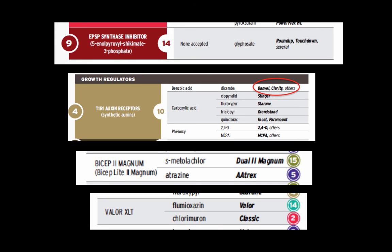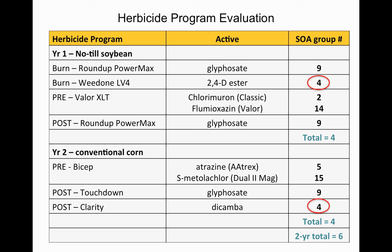Another way to introduce diversity is to keep glyphosate post in corn but add dicamba — via Status or Clarity. Looking up Clarity on the chart shows it's dicamba, a Group 4 site of action, which introduces some diversity in post-corn. This is an interesting case because 2,4-D and dicamba don't affect plants exactly the same way, but both are listed as Group 4 on the chart. So with Group 4 appearing in both beans (2,4-D) and corn (dicamba), and glyphosate also used both years, those both fall out — giving a total of 6 over the two years.